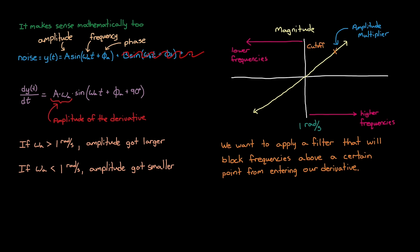So we want a filter that can block frequencies above a certain point from entering our derivative and causing problems. This point is called the cutoff frequency, and as designers, we have the choice of where to place it. For example, do we place it at a high frequency and block just the orange section, or place it lower and block the green section?